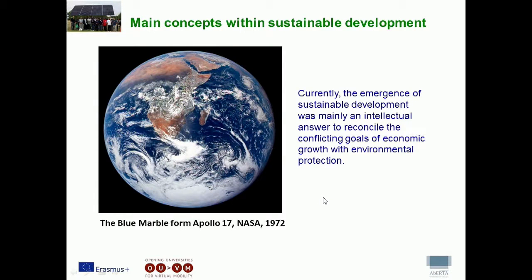The modern understanding of Sustainable Development emerged gradually since the 1950s after World War II. It was also during the second half of the 20th century — a period of unprecedented economic growth and scientific and technological innovations, together with rapid population growth — that humanity began to exceed the environmental limits of the Earth, hence destabilizing its equilibrium and causing damaging consequences for the wellbeing of current and future generations. The Blue Marble photo, taken from Apollo 17 in 1972, illustrated for the first time the limits of our planet and stressed the emergency to change. And currently, the emergence of Sustainable Development was mainly an intellectual answer to reconcile the conflicting goals of economic growth with environmental protection.